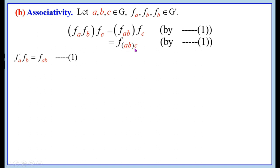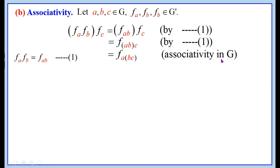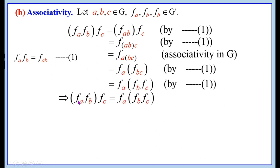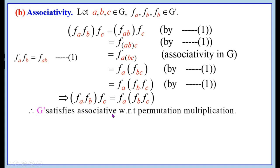Continuing: F_{A(BC)} equals F_A ∘ F_{BC} by equation 1, and F_{BC} equals F_B ∘ F_C by equation 1. Thus (F_A ∘ F_B) ∘ F_C equals F_A ∘ (F_B ∘ F_C). Therefore, G' satisfies associativity with respect to permutation multiplication.